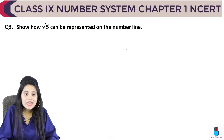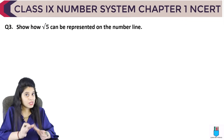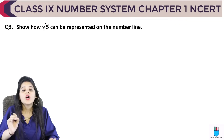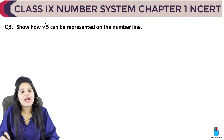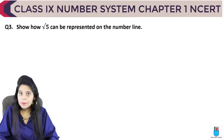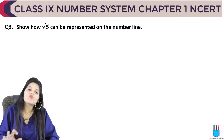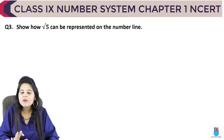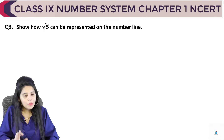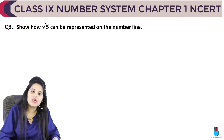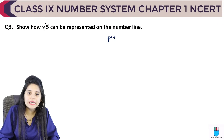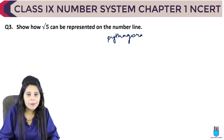Question number 3 — this is an important question. Show how √5 can be presented on the number line. Since 5 is a prime number, we will use the Pythagoras theorem.